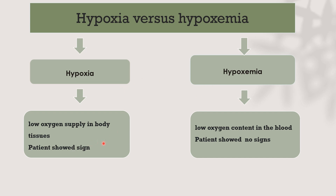Hypoxia means there is low oxygen supply to body tissue and the patient shows signs of hypoxia such as increasing lactate, low SpO2, and clinical signs like agitation, irritability, and tachypnea. The other term is hypoxemia, which means there is low oxygen content in the blood but the patient does not show any signs of hypoxia.